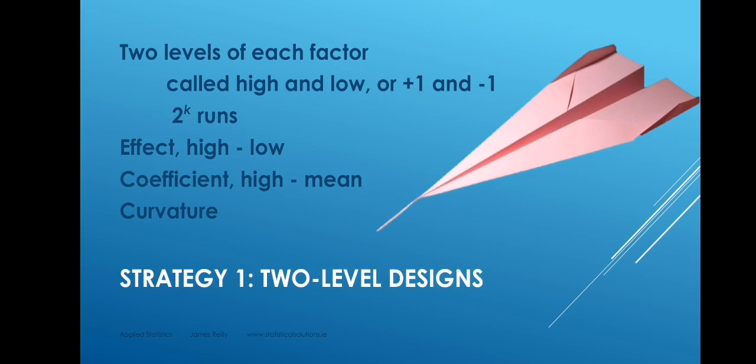Our first strategy is to only consider two levels of every factor. So even though a factor may have many levels, in the experiment we will only consider two levels. We will call those levels high and low, or plus one and minus one. So if we have k factors each at two levels, this will give 2 to the power of k runs, not counting replication. The effect of a factor is the difference between the average response at its high level and its average response at its low level.